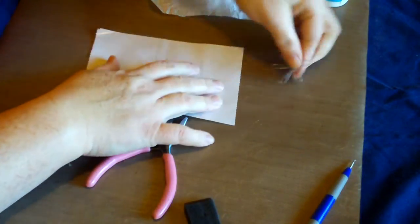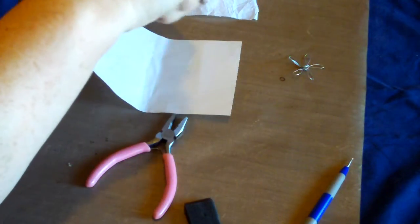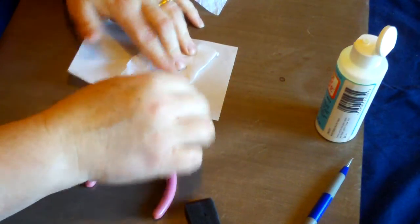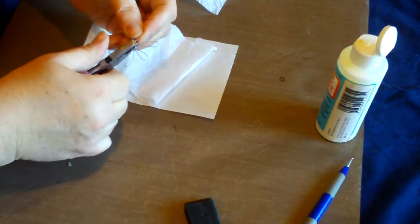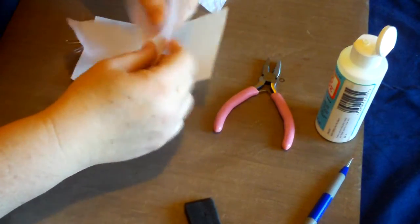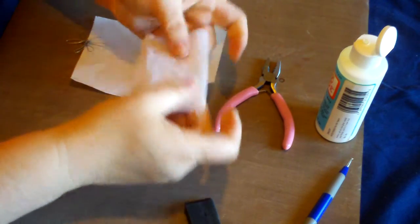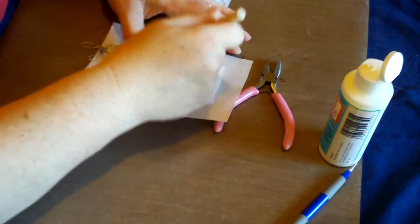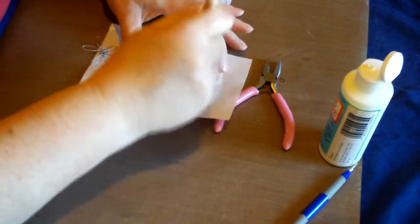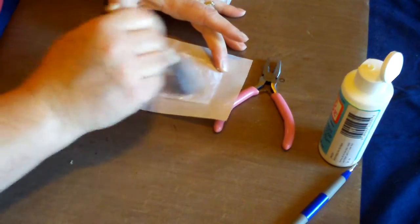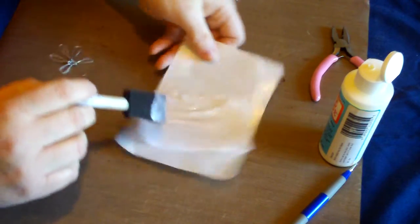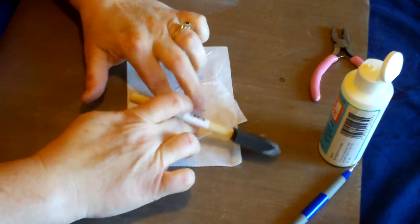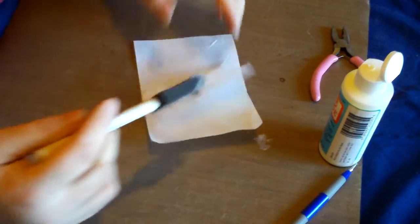There. Now you take your Mod Podge and your very first piece of tissue paper. Now I fold this in half - you only need a double piece for the very back of it. Put some of the Mod Podge on, take your brush and brush it on so that it's nice and even and saturate the paper with your Mod Podge. Put your wire in, push it down onto the paper.